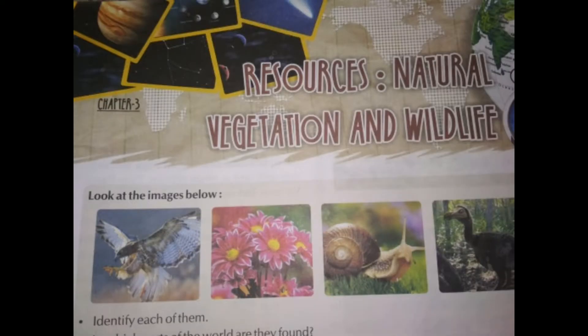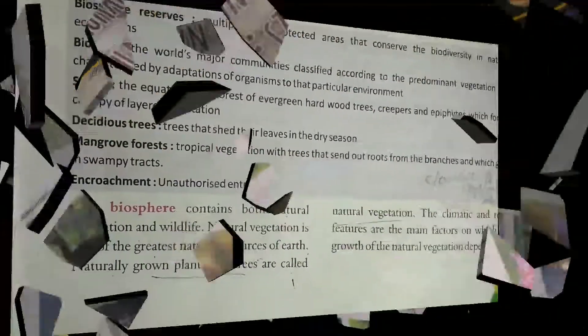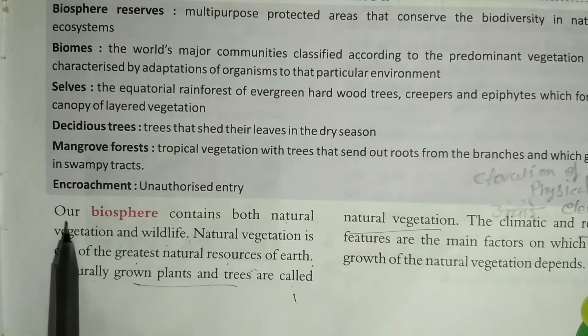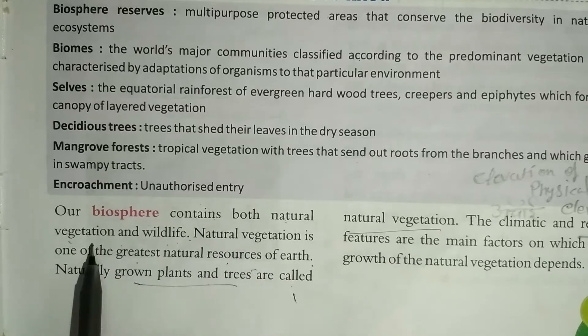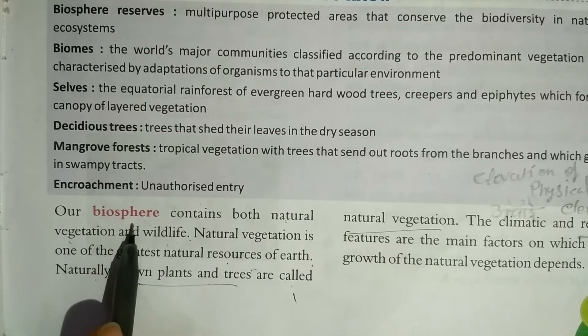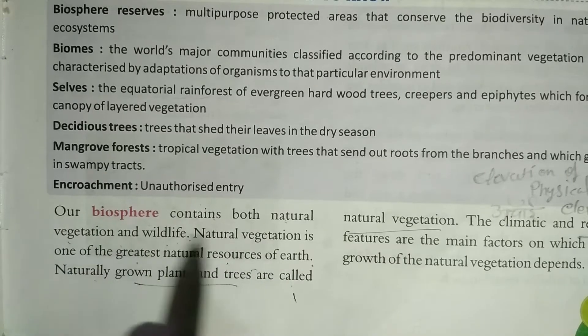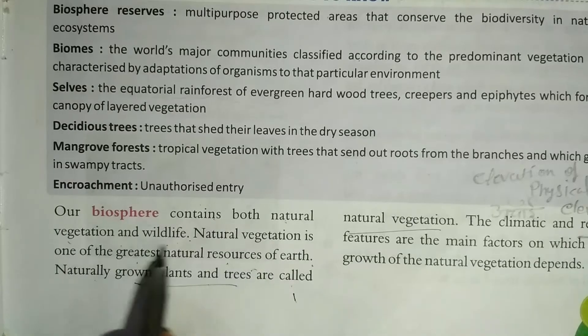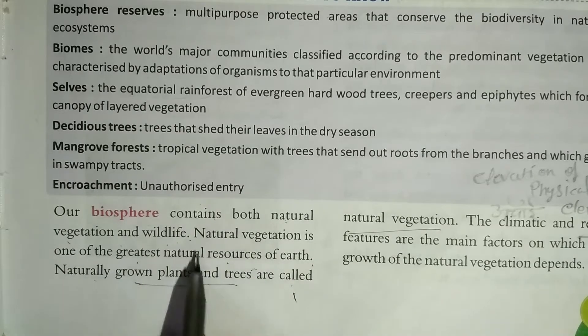Hello students, today we shall start Chapter 3 from Geography. The name of the chapter is 'Natural Resources: Natural Vegetation and Wildlife.' Our biosphere contains both natural vegetation and wildlife — two key components we will study.